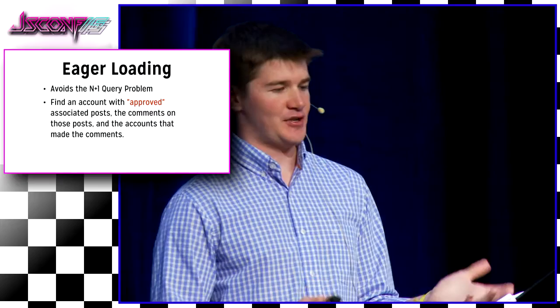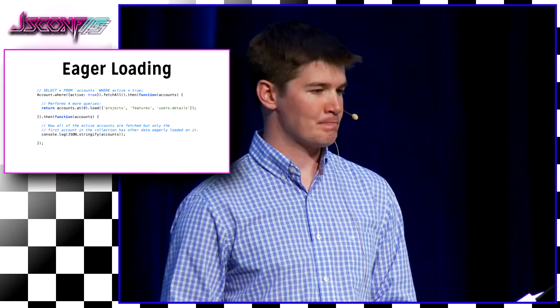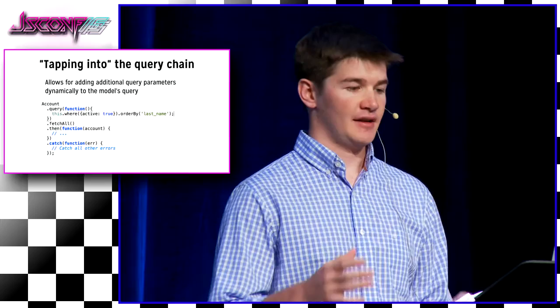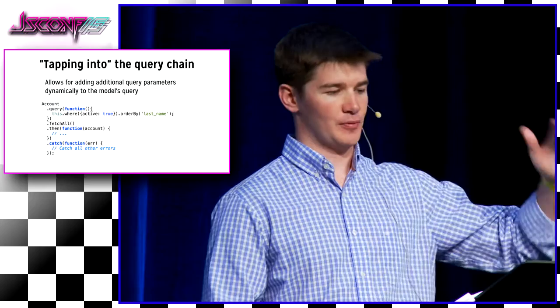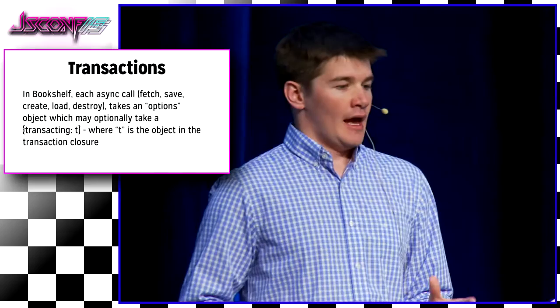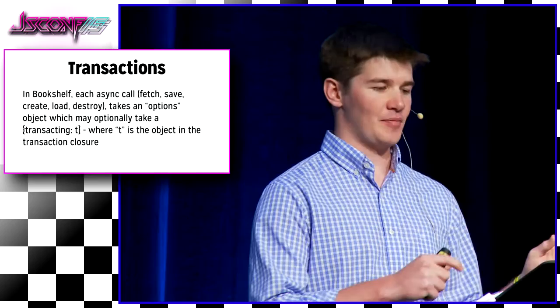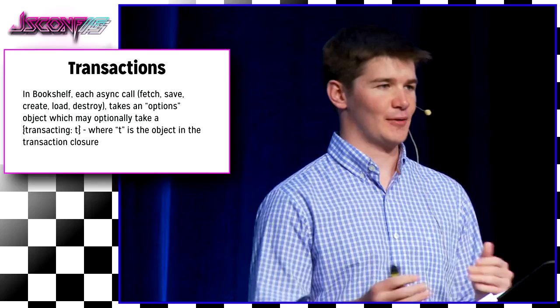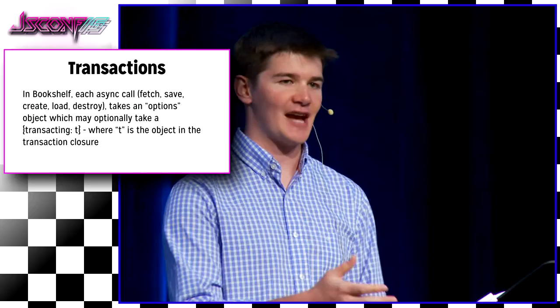The N+1 problem is when you're trying to load data onto a collection — if you have 26 items, you'd have 26 extra queries. So it tries to do one query, and then another query for the extra related results. An example is to find an account with all the posts under the account, all the comments under those posts, and all the accounts that made the comments — and that's what that would look like with 'withRelated' using dot notation for each of the relations. It also allows you to constrain eager loads dynamically, load things after the fact, and tap into the query chain to add things that are more SQL-specific under the hood.